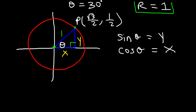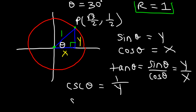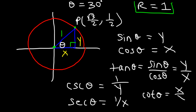Now there are some other trigonometric functions that you need to know — there are six of them, and these are the first two. Tangent theta is sine divided by cosine, so tangent theta is y divided by x. Cosecant theta is 1 over y. Secant theta is 1 over x. Cotangent theta is x divided by y. So those are the six trigonometric functions that you need to be aware of.